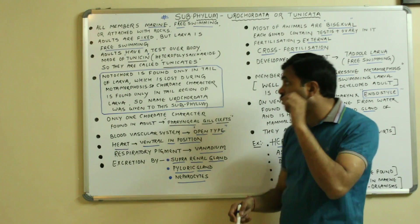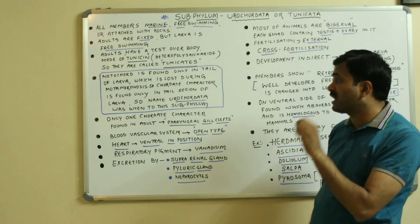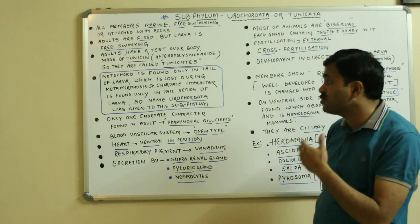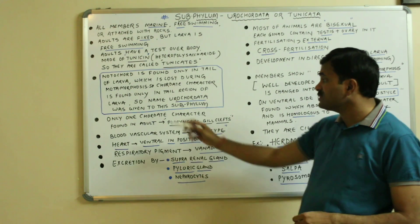Notochord is found only in the tail of the larva which is lost during the process of metamorphosis. So the chordate character is found only in the tail region of the larva, so they are given the name Eurochordata.